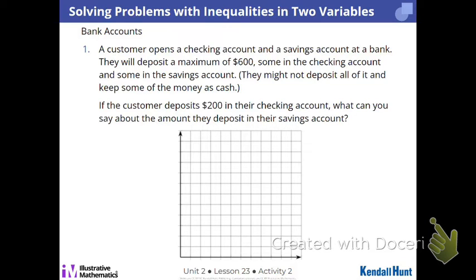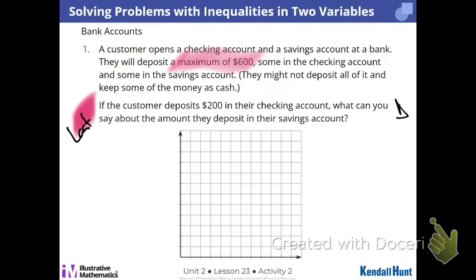So again, A, B, C, D is what you're going to roll through for our context of this savings and checking account. It says you need to deposit a maximum of $600 — some in checking, some in savings. This is the question you're going to answer, but that's after you've done A, B, C. So you're going to write a general inequality, graph it, claim one point that works, and then answer that question last — that's D.